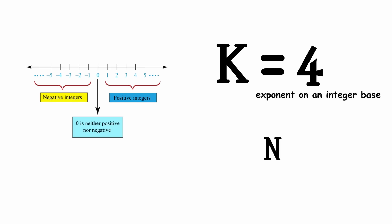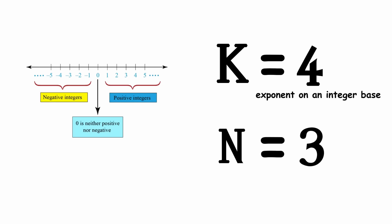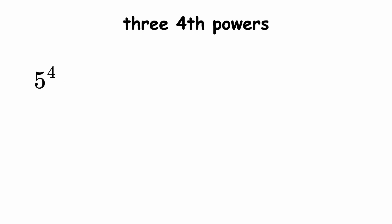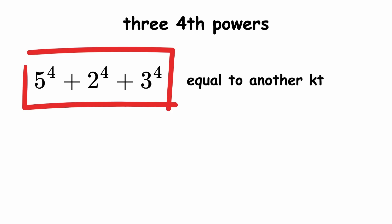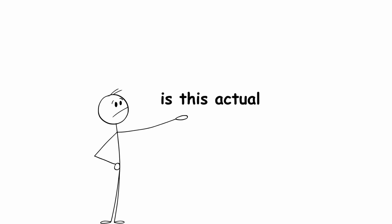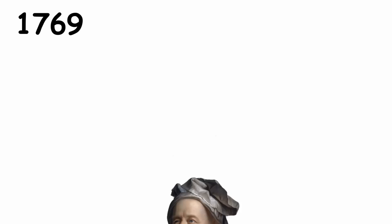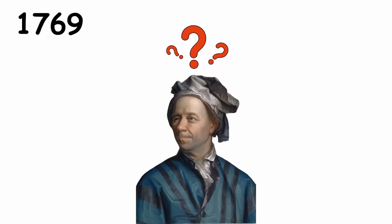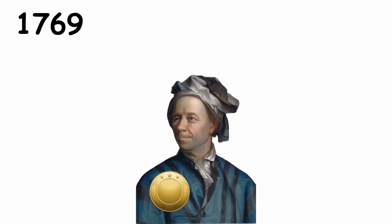Now we choose a second integer n, which is greater than 1 and less than k — for instance, n equals 3. Take n many kth powers of positive integers and add them together. In our case, we are adding together 3 fourth powers. We could have 5 to the 4th plus 2 to the 4th plus 3 to the 4th, for instance. Our goal is to make this sum equal to another kth power. We failed with this example because 5 to the 4th plus 2 to the 4th plus 3 to the 4th is 722, which is not the 4th power of any integer. In 1769, Swiss mathematician Leonhard Euler conjectured that it is not possible, and the conjecture was named in his honor.